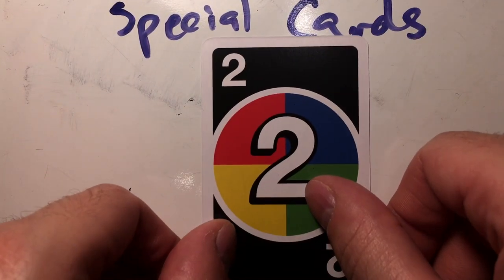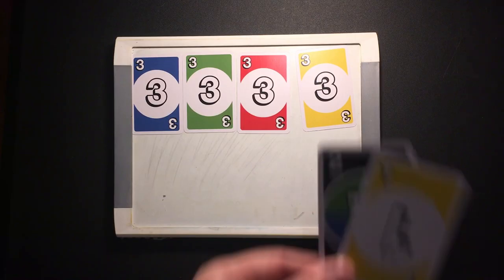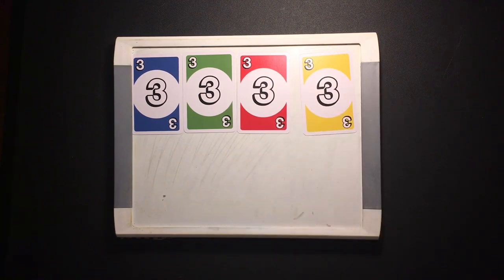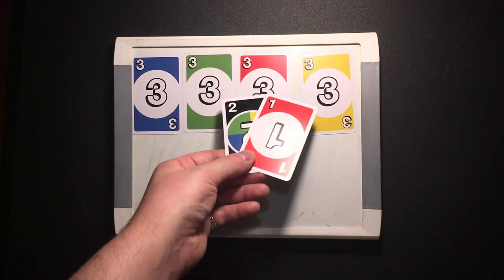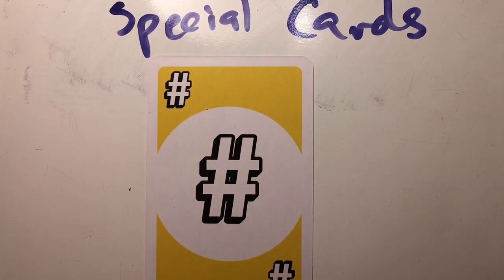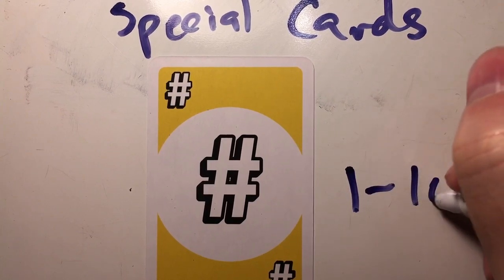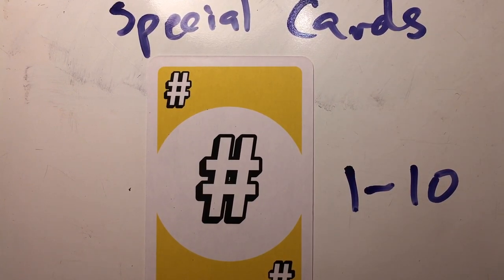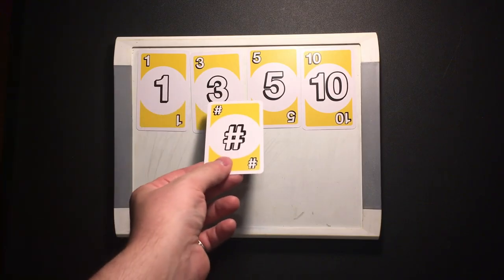Next, special cards. The Wild DOS card is the only card with a two on it. The color is wild and it's decided by the person playing it or by the person who is matching to it if it's in the center row. The wild hashtag card is the only card without a number on it. It counts as any number card one through ten, but the color of the hashtag card just like the DOS card. The number is decided by the player playing it or the player matching to it.